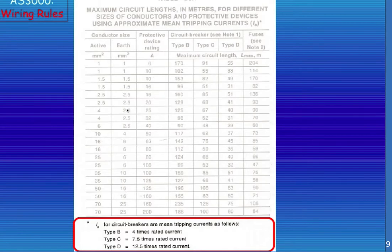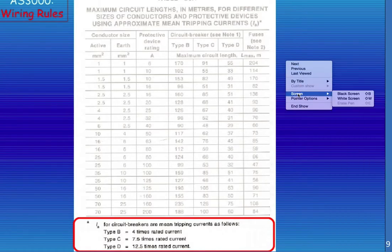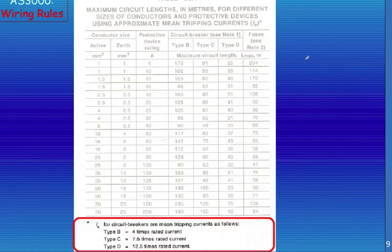So the first thing we need to understand is we have this table from AS3000 called table B5.1. And the first thing you'll notice is that we have conductor sizes over on the left-hand side, and we've got our active conductors in square millimeters, we've got our earth conductor in square millimeters. Our protective device, so our circuit breaker rating, effectively that's what that is, here in this column in amps.